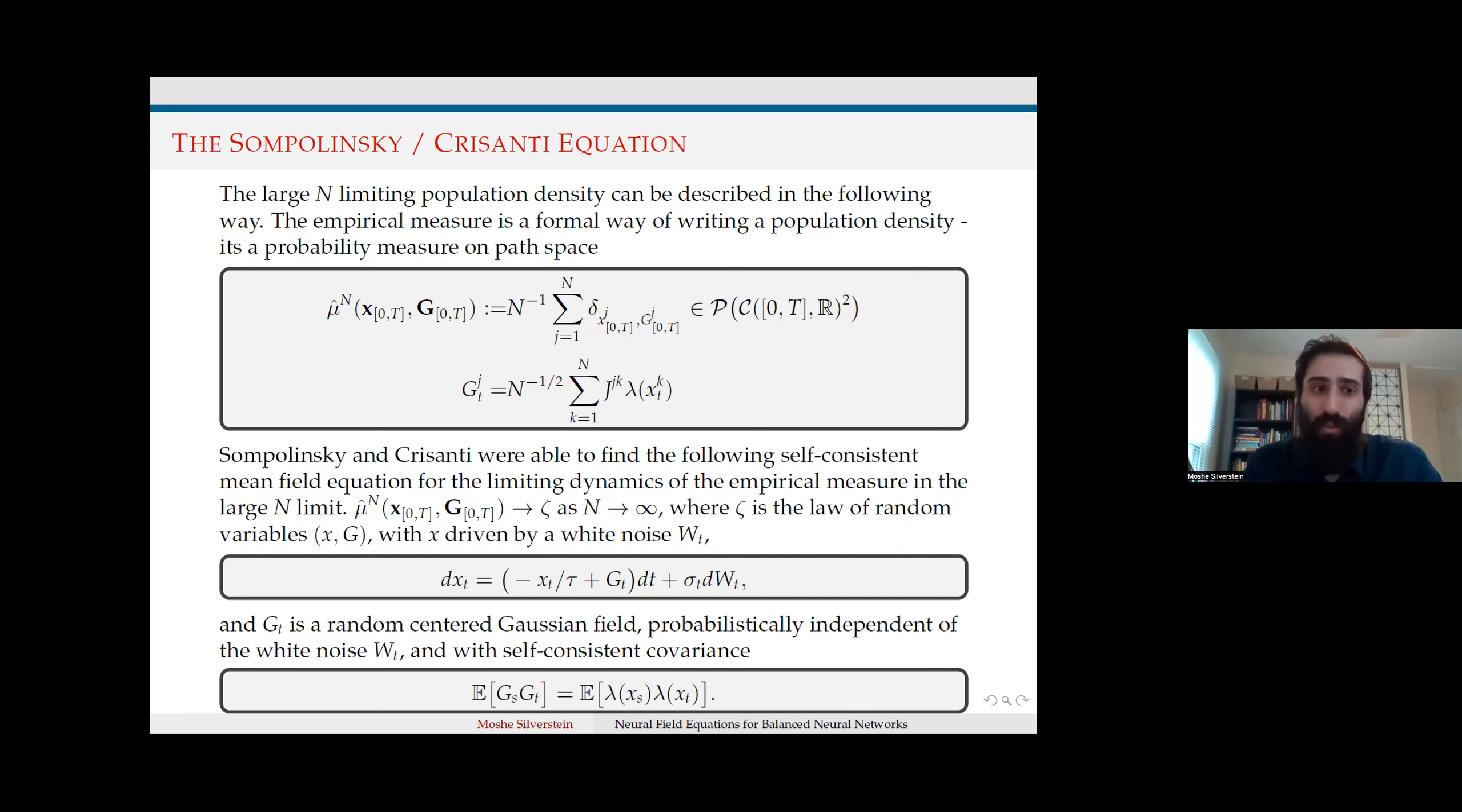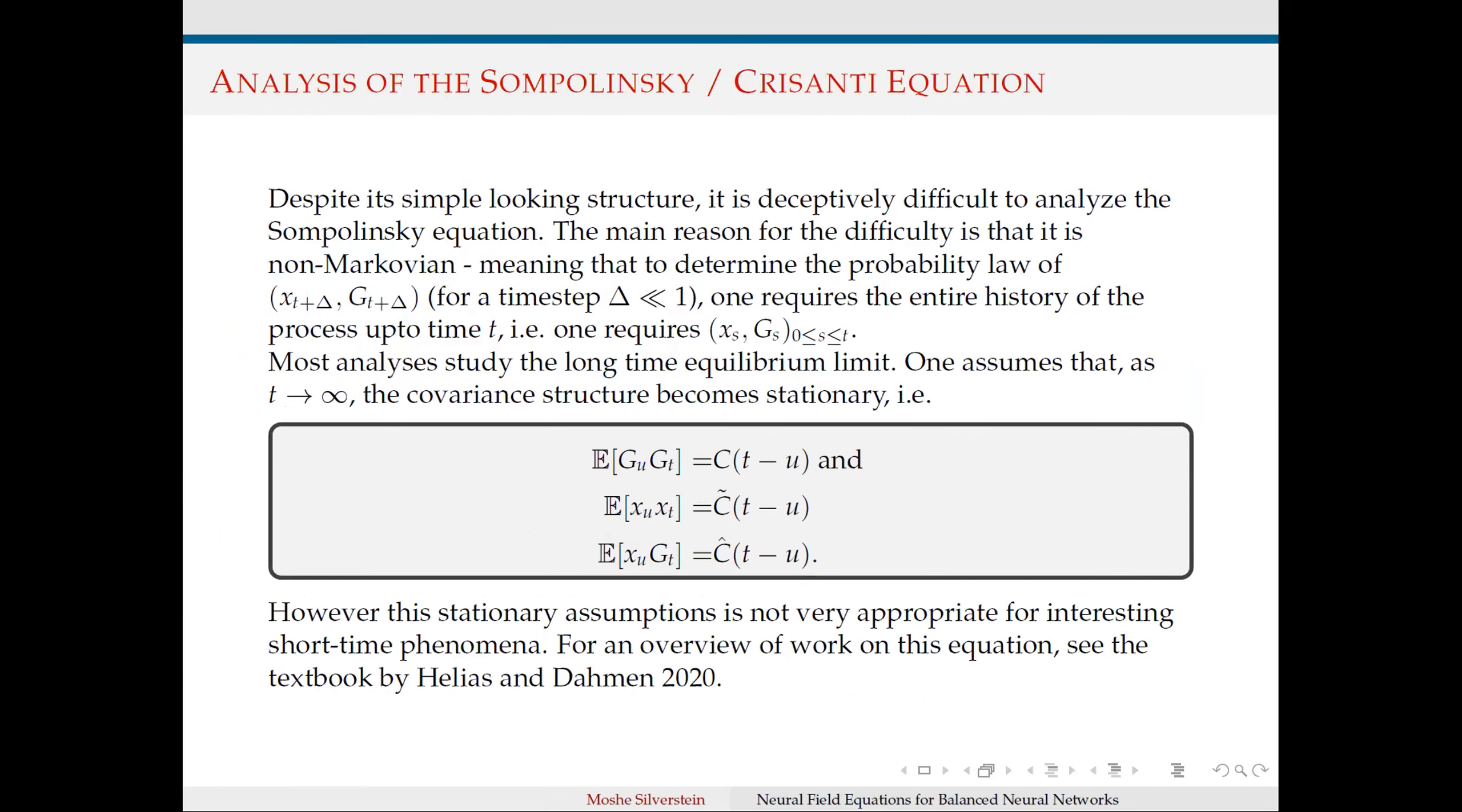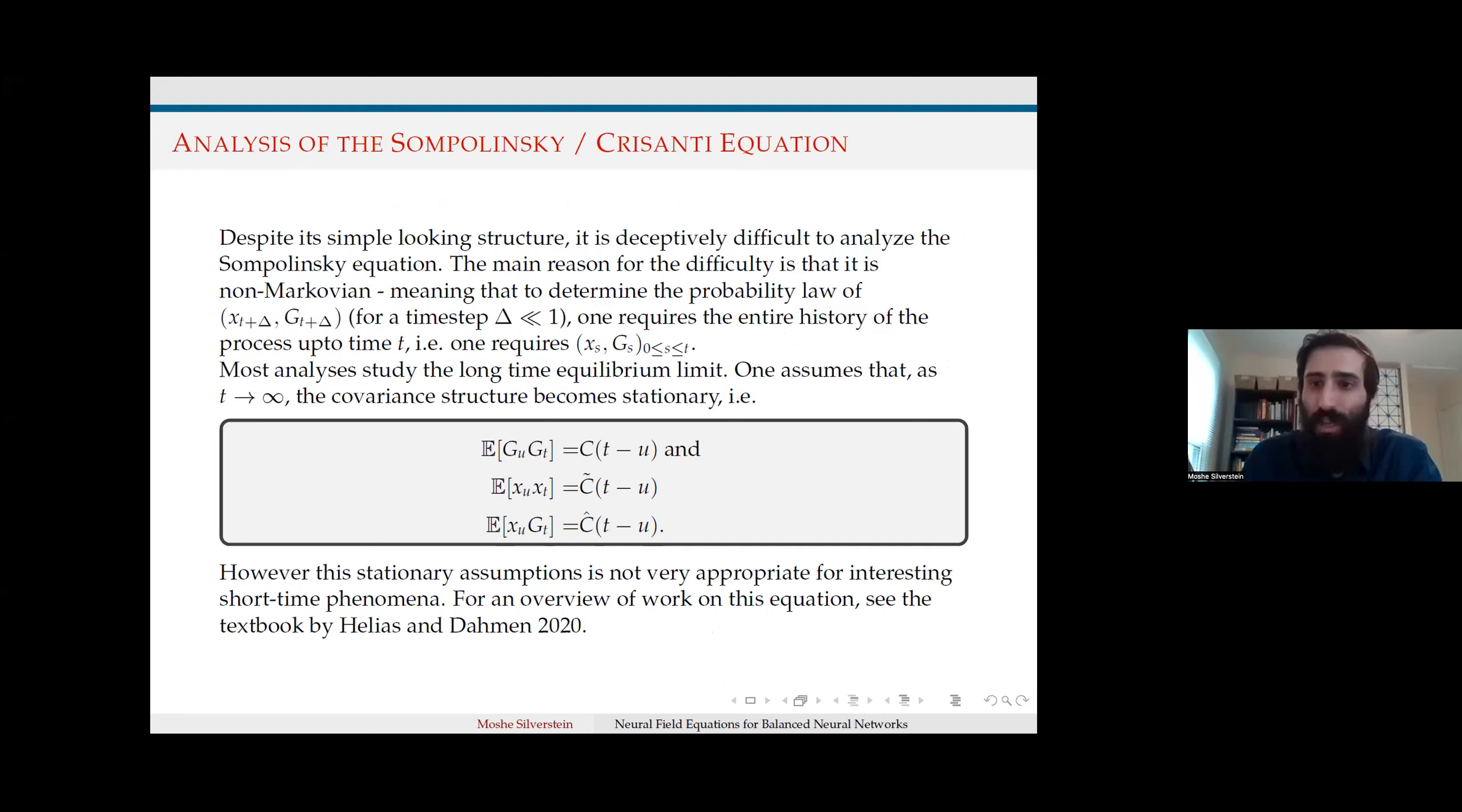This model however is difficult to analyze due to the non-Markovian nature of the equation. It requires the entire history of the system at each step to solve. This can be addressed by taking the long-term equilibrium where the covariance becomes stationary. However, we then lose insight into short-term phenomena that can be of great interest. In the large N limit, the model does lose quite a bit of information.